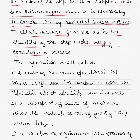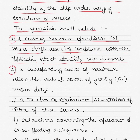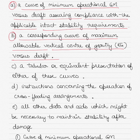The information supplied shall include, firstly, a curve of minimum operational GM versus draft that assures compliance with the applicable intact stability requirements. The second thing the information should include is a corresponding curve of maximum allowable vertical centre of gravity — that is KG, the distance from the keel to the centre of gravity of the ship — plotted against the draft of the vessel, with different drafts giving different values of KG.